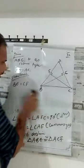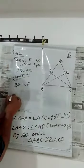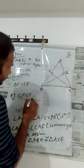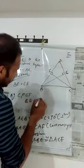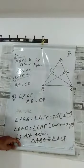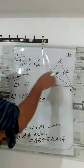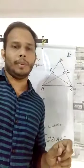By CPCT, BE equal to CF. So BE and CF are equal — that is, the two altitudes are equal. That is what we needed to prove.